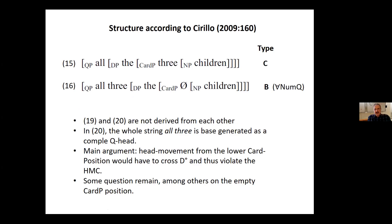According to Cirillo, the type C, this is where the article intervenes. So there we have two items in two different positions, whereas in the option B, and also the option A, the Italian option with coordination, we have the one string in the QP. According to Cirillo, 19 and 20 are not derived from each other. So in 20, he wants to derive the whole string, all three, to base generate it as a complex Q head. And the main argument is that if we want to derive 16 out of 15, we would have to move the head, the cardinal head, and then we would have a violation of the head movement constraint. Of course, some questions remain in his theory, among others, this strange empty cardinal phrase in this structure.